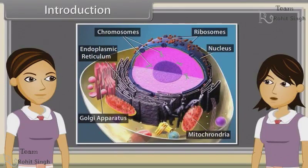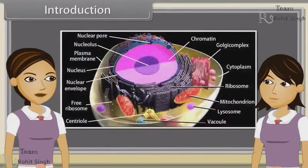I think we have completed all the topics. No Madhuri, there are some more topics to be learned. They are: structure of cytoskeleton, cilia and flagella, centrosomes and centrioles, nucleus and microbodies. So come, let's know about them in this module.